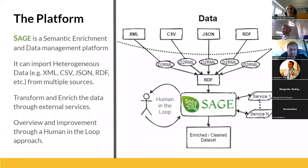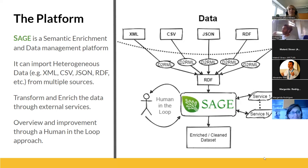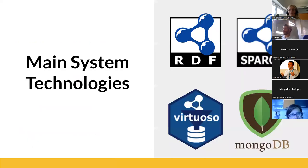SHADES is basically a data management platform. It can handle data from multiple sources and in various formats. We can import data whether it's in XML, CSV, JSON — whatever the format — and we transform everything to RDF and then import it to SHADES. Within SHADES we have services that allow you to enrich your data. We also have a human-in-the-loop approach where you can validate and in some cases retrain our tools to give better results. The output can be sent to Europeana, where the tool is integrated, or you can export your enriched data after cleaning and reformatting.